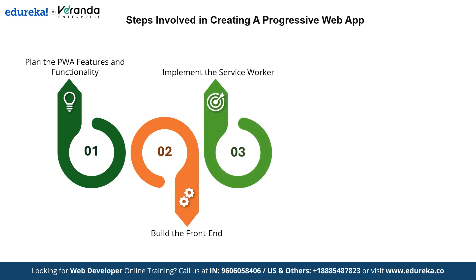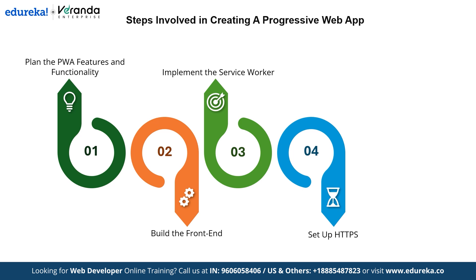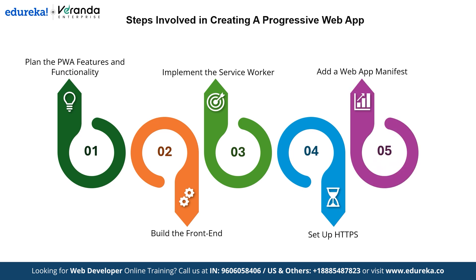After the front-end is complete, we implement a service worker. This is a critical step where we add functionality for offline access, caching and background synchronization, making the app fast and reliable even in poor network conditions. Then we set up HTTPS, which secures the app by encrypting data exchanges. This step is essential not only for protecting user data, but also for enabling features like the service worker.